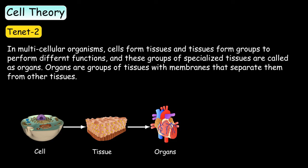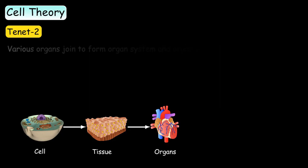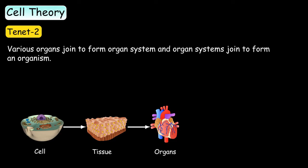So, organs are groups of tissues with membranes that separate them from other tissues. Various organs join to form an organ system and organ systems join to form an organism.